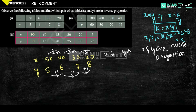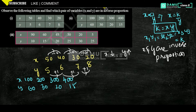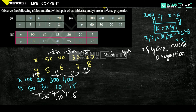Next one. x is 100, and y values are 60, 30, 20, 15. Here x is increasing by adding 100 each time, but y is decreasing — first by 30, then by 10, then by 5. So x is increasing and y will be decreasing. Therefore x and y are in inverse proportion.